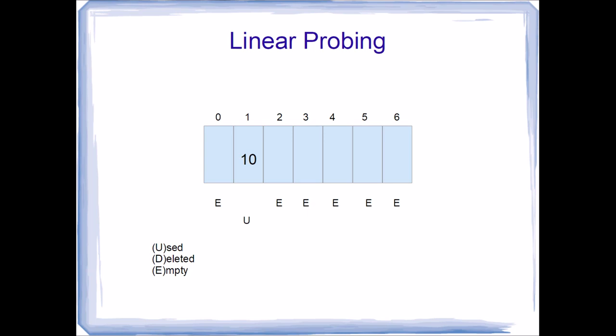Now assume we want to assign the value 20 to our hash table. If we examine element 1, we notice that it is marked as used, so 20 cannot be assigned there. According to linear probing, we check the very next element. It is marked as empty, so we assign 20 to this element and change its mark from empty to used.